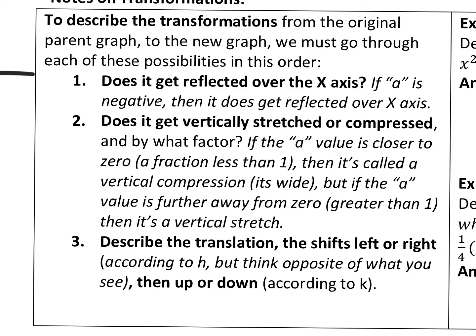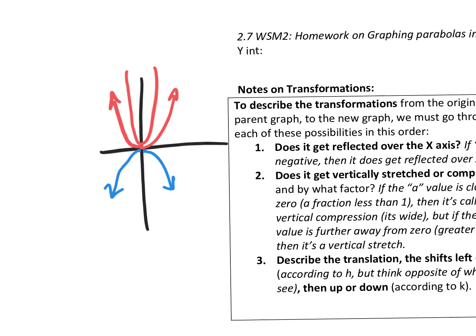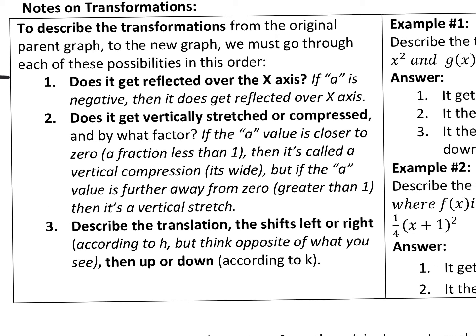The second question: does it get vertically stretched or compressed? If you vertically stretch the parent parabola, it gets narrower. If you compress it, it gets wider. If the a value is a fraction less than one — closer to zero — that's a vertical compression, because multiplying by a fraction shrinks the value. If the a value is greater than one, like two or three, that's a vertical stretch, which makes it narrower.